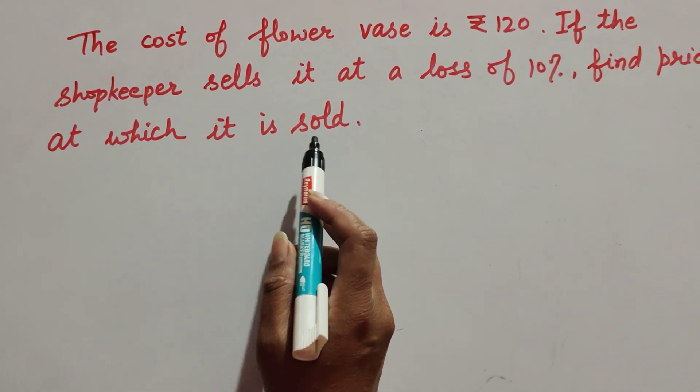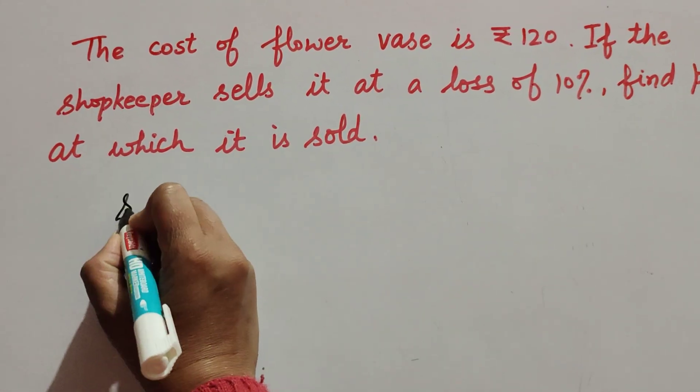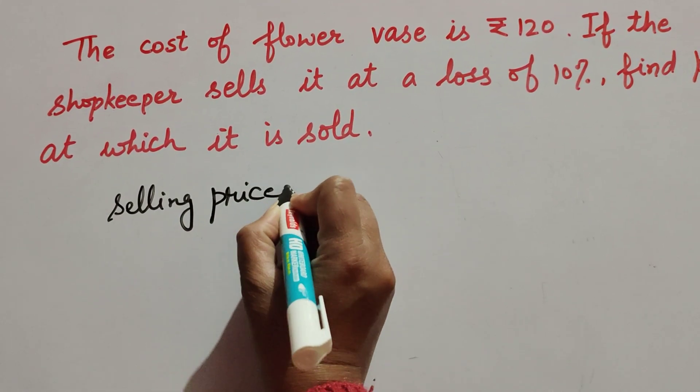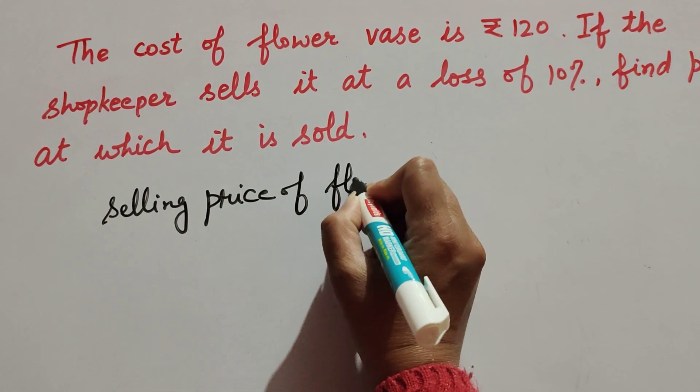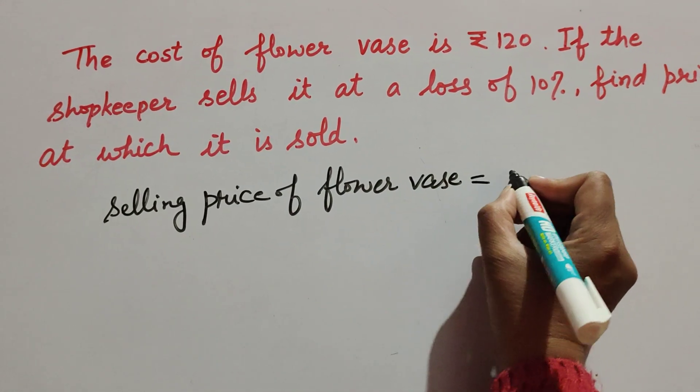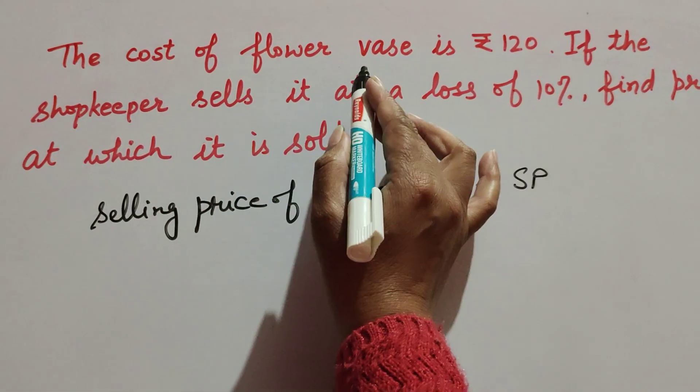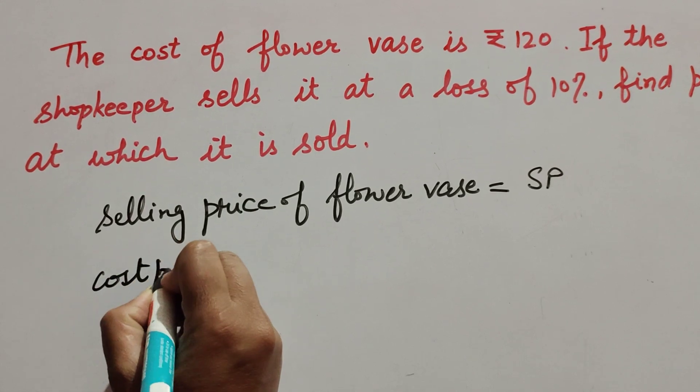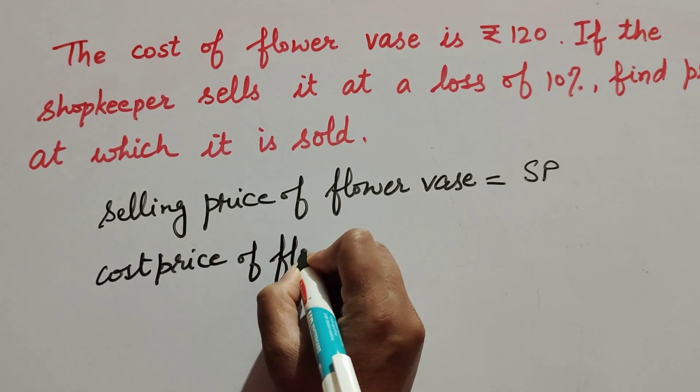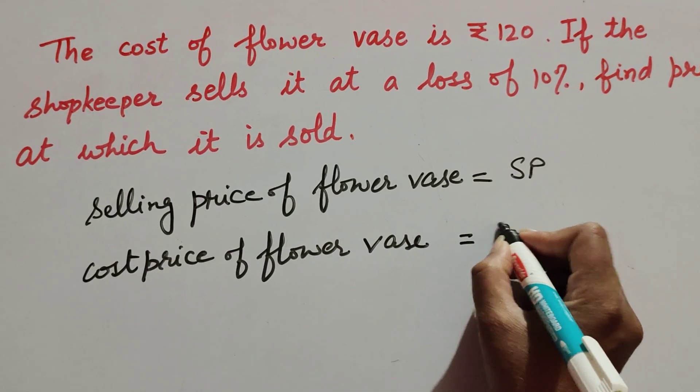In this question we find the selling price, selling price of the flower vase. So the selling price of flower vase is equal to SP, because that we have to find. And cost price of flower vase is also given. Cost price of flower vase is equal to rupees 120.